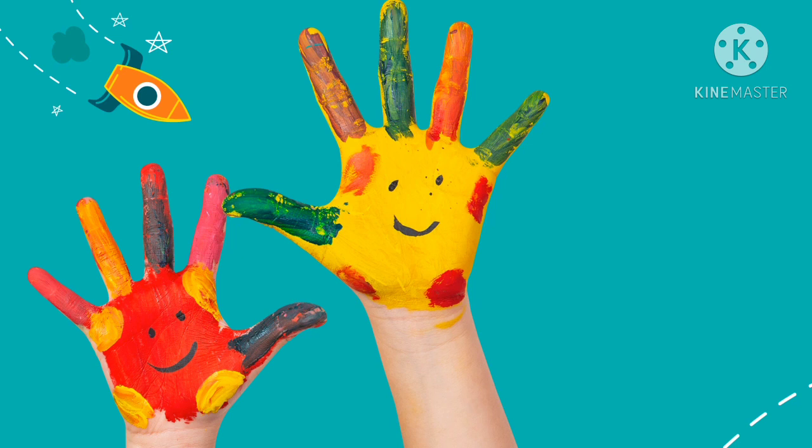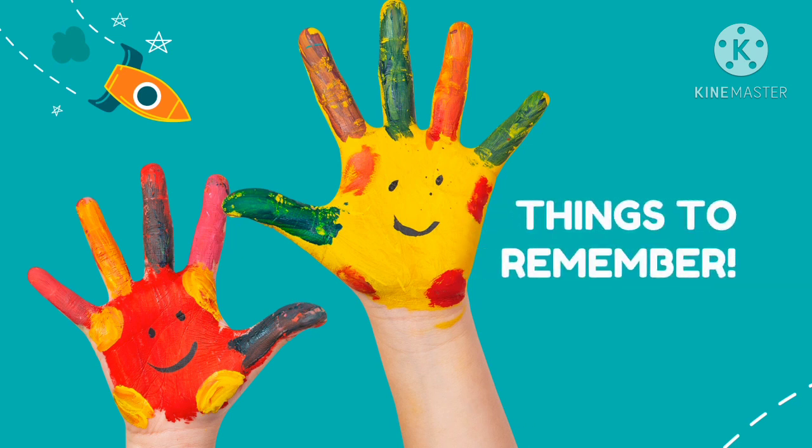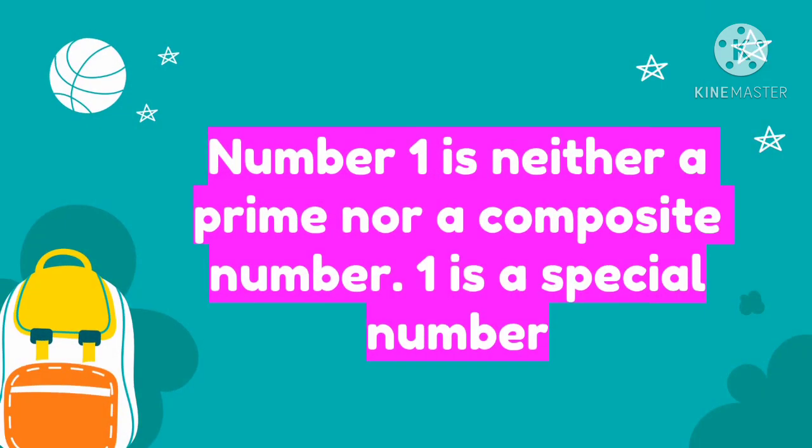So here are the things that we need to remember in differentiating prime numbers from composite numbers. Number 1 is neither a prime nor a composite number. 1 is a special number.